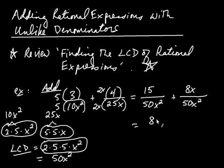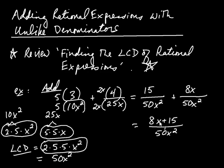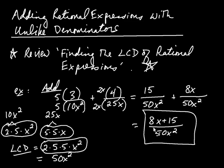So we write this as 8x plus 15 all over 50x squared. Sometimes you can go further and cancel, but I can't here — you can only cancel when it's multiplication. Right now it's addition, and I can't factor the numerator because 8 and 15 don't have anything in common. So for this problem we're finished — we can't reduce. That's how we add two rational expressions: get a common denominator, then play this comparison game of the factorizations.